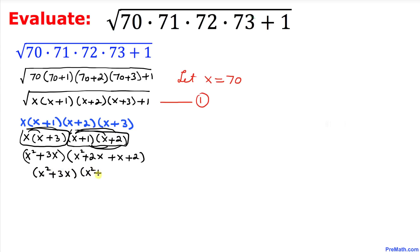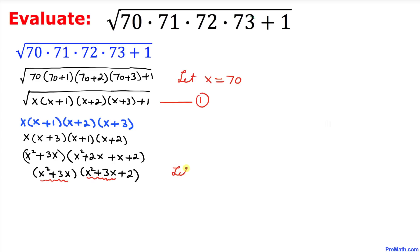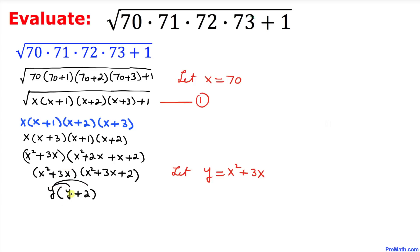Now we can see that x²+3x appears in common in both products. So let me substitute again: let y equal to x²+3x. The product of our two pairs then becomes y times (y+2).